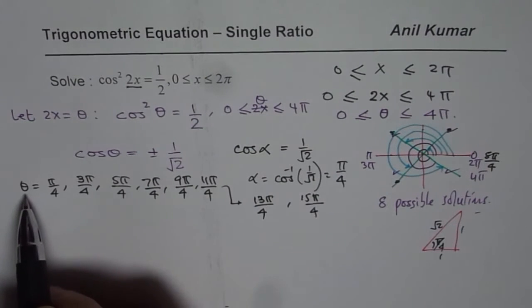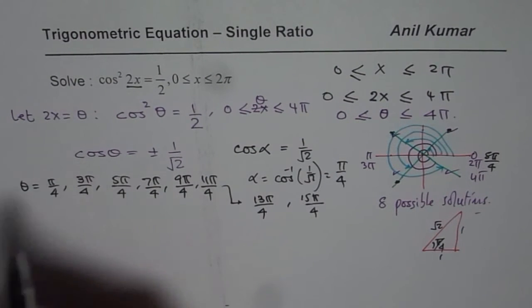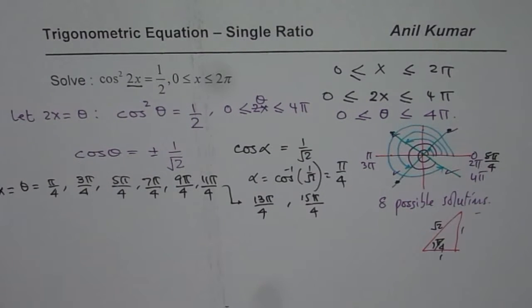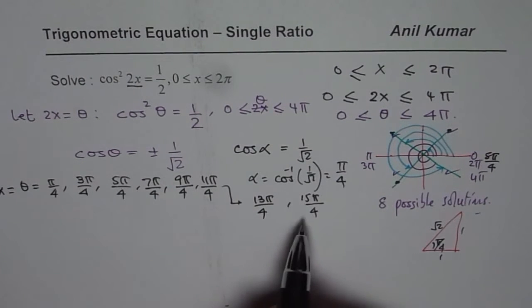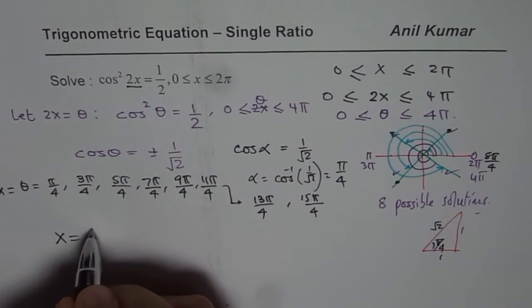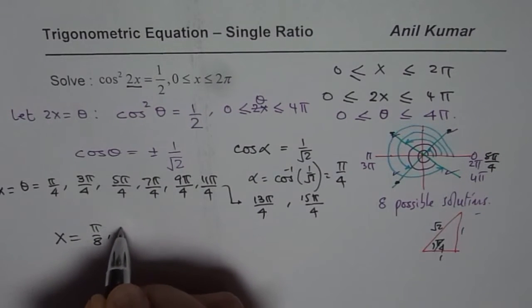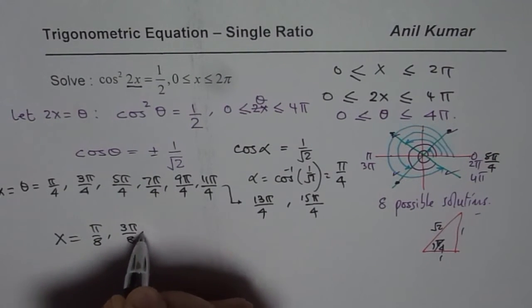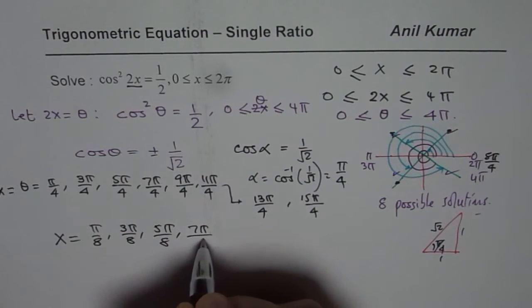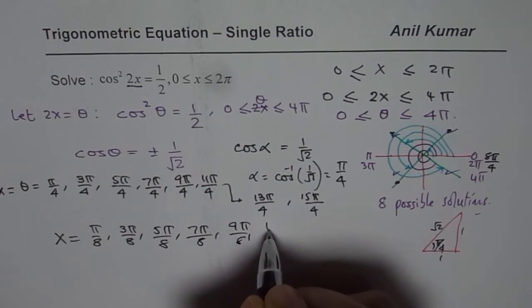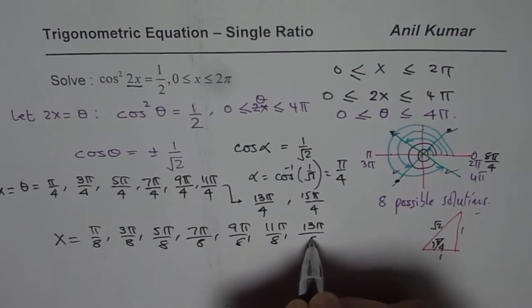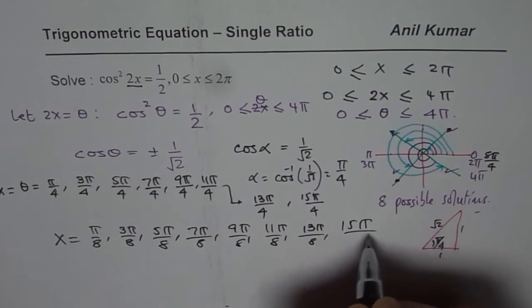So this is θ. But what is θ? θ is 2x. So 2x is all that. I am not rewriting this but I am writing what x equals. So x equals half of these values: π/8, 3π/8, 5π/8, 7π/8, 9π/8, 11π/8, 13π/8, and 15π/8.